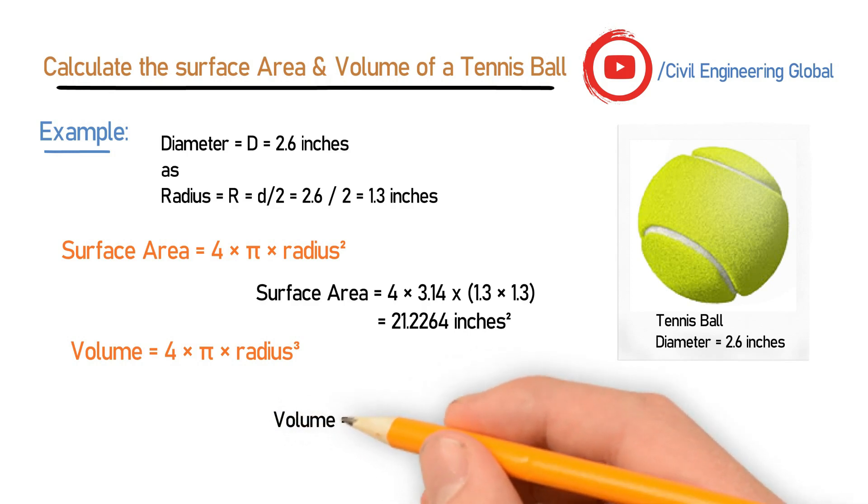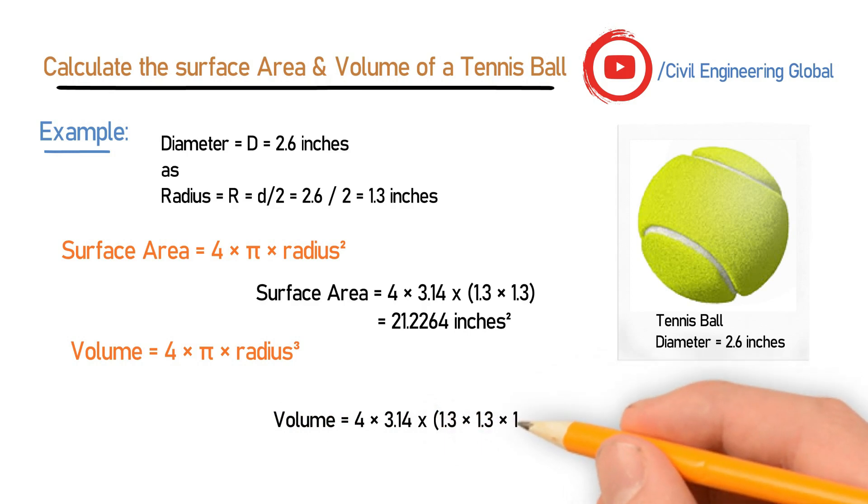This is cube, so we will take it three times: 4 × 3.14 × 1.3 × 1.3 × 1.3. This will give you 27.59432 inch³. So this is the volume of the tennis ball. In this short example, we have calculated the surface area and the volume of the tennis ball.